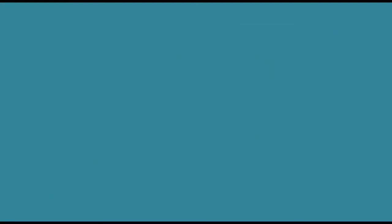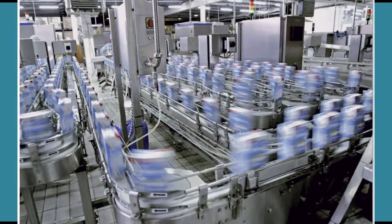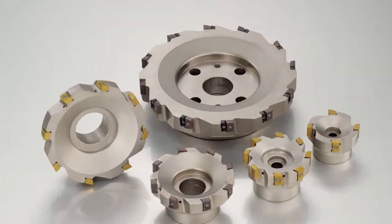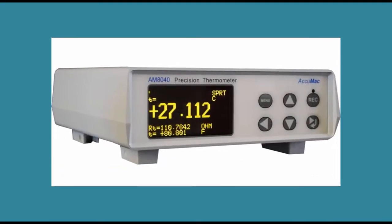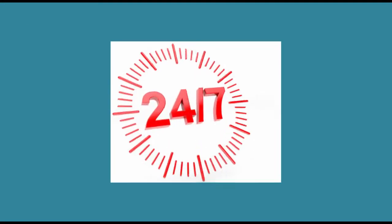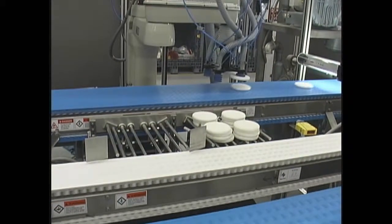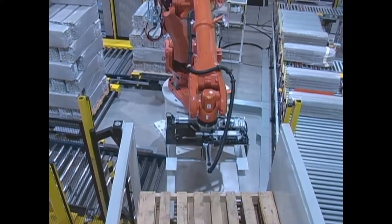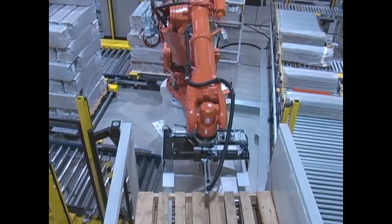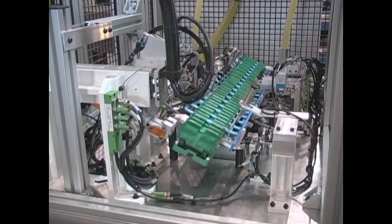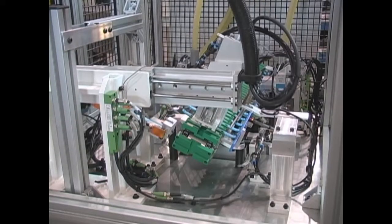Factory automation is used to ensure quality products are made consistently, with high precision, high throughput, and no downtime. Mid-range distance measurement sensors are the eyes and ears of factory automation. They are used to make measurements, detect presence and absence of materials, and inspect processes.